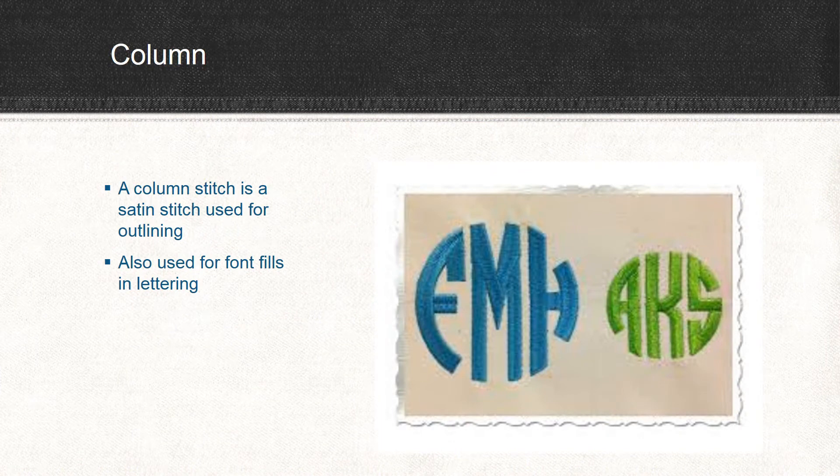A column stitch is a satin stitch that's used for outlining. It can also be used to fill in fonts when doing lettering.